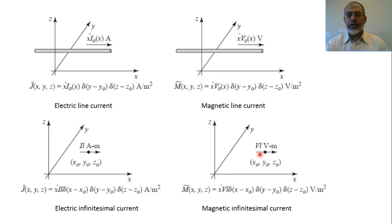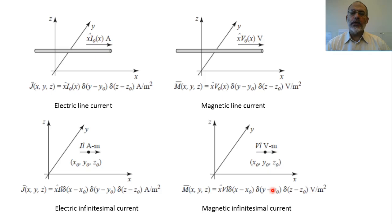Similarly, for an infinitesimal magnetic current source, the amplitude is V·L with units of volt-meter, centered at (x₀, y₀, z₀). The equivalent magnetic current density is M equals V·L multiplied by δ(x − x₀) δ(y − y₀) δ(z − z₀), with units of volt per meter squared. These are the different representations for the electric and magnetic current sources, and how to express them as volume electric current density and volume magnetic current density.